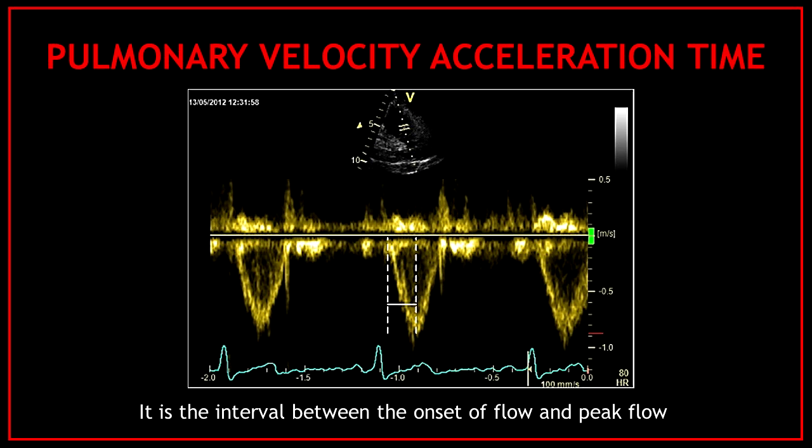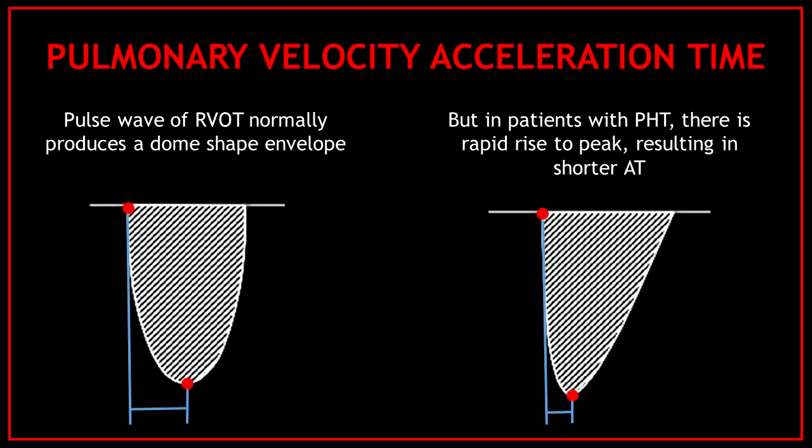The pulmonary velocity acceleration time is the interval between the onset of flow and peak flow velocity. On the left we can see a normal pulse wave pattern of the right ventricular outflow tract, which normally has a dome-shaped envelope and is very symmetrical. However, in patients with pulmonary hypertension there is a rapid rise to peak, resulting in a shorter acceleration time, as you can see on the right-hand side image.